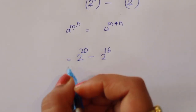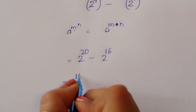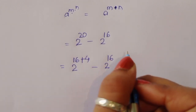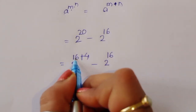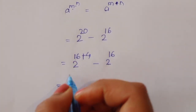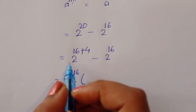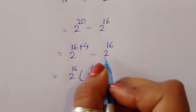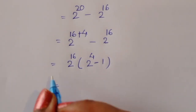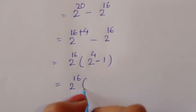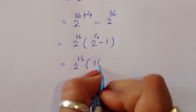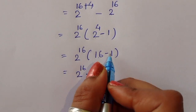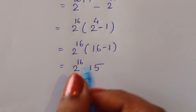We can convert 2 power 20 as 2 power 16 plus 4. Now we have 2 power 16 common in both terms, so we take out 2 power 16. That gives us 2 power 16 times (2 power 4 minus 1), which is 2 power 16 times (16 minus 1), equal to 2 power 16 times 15.